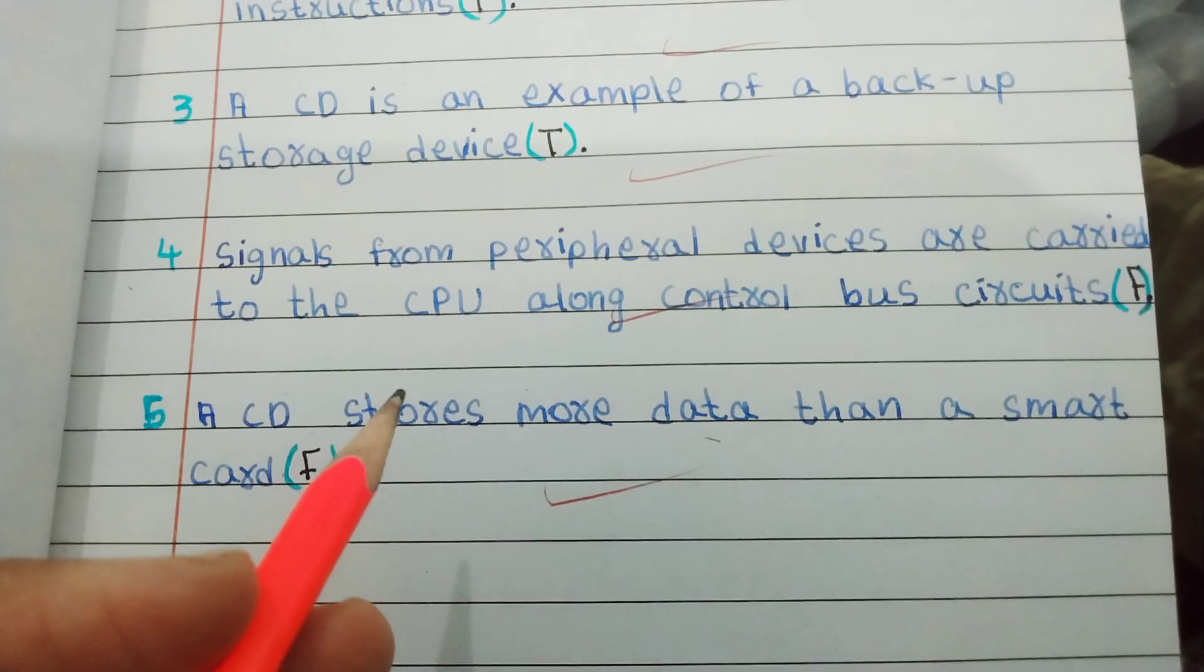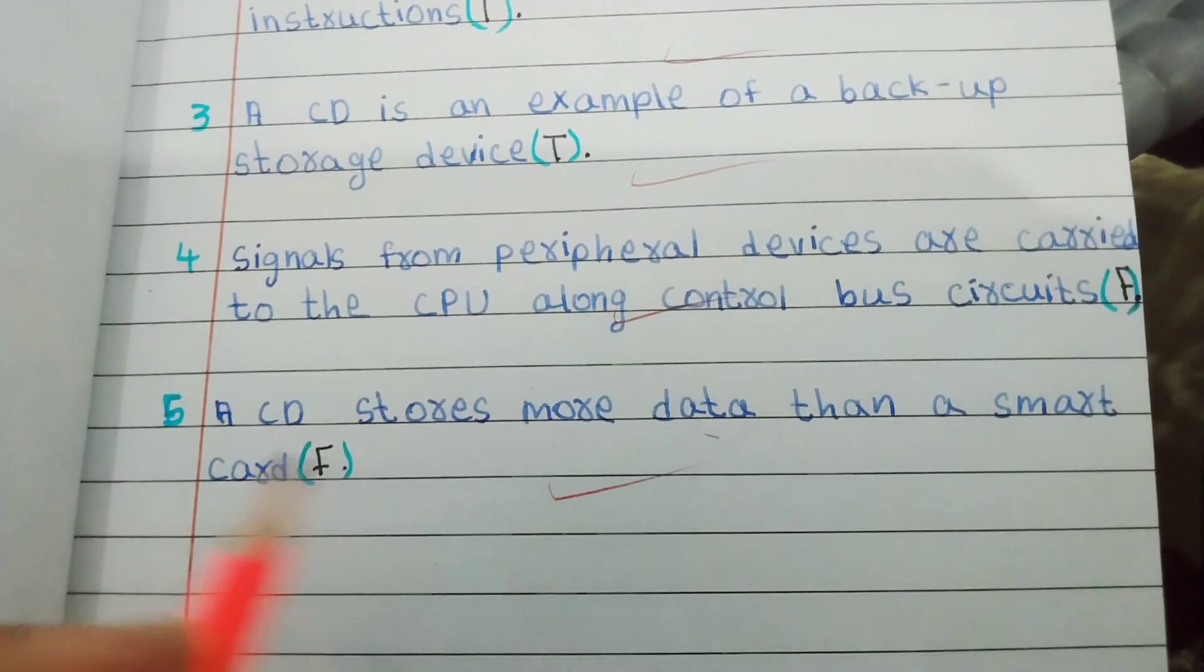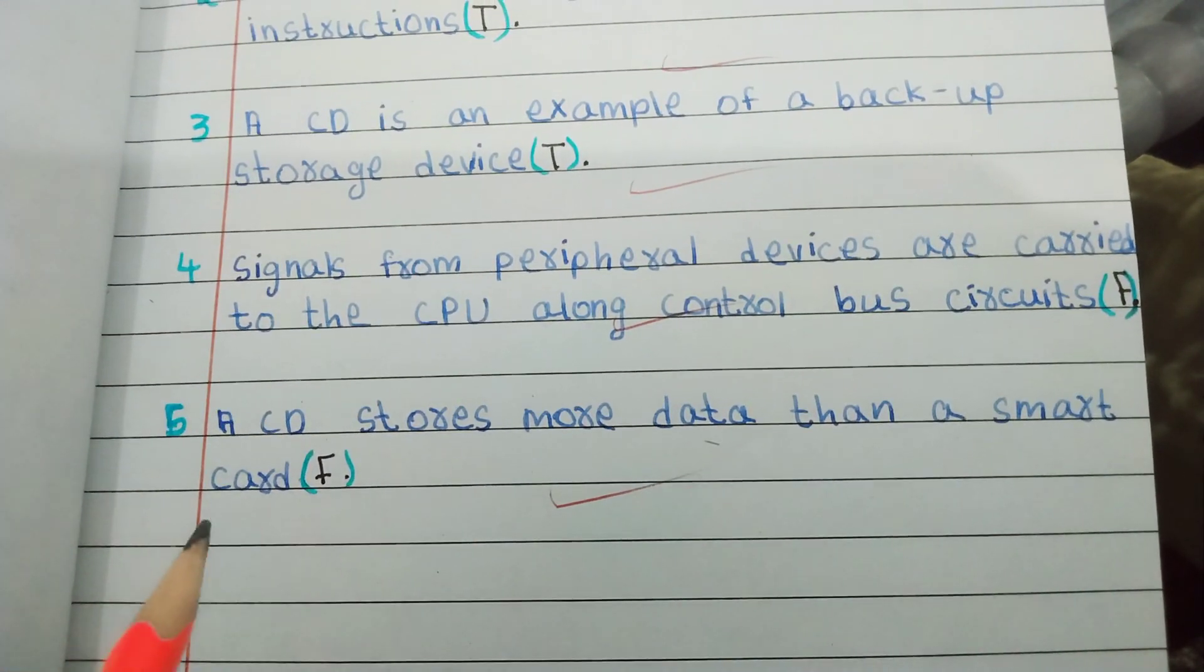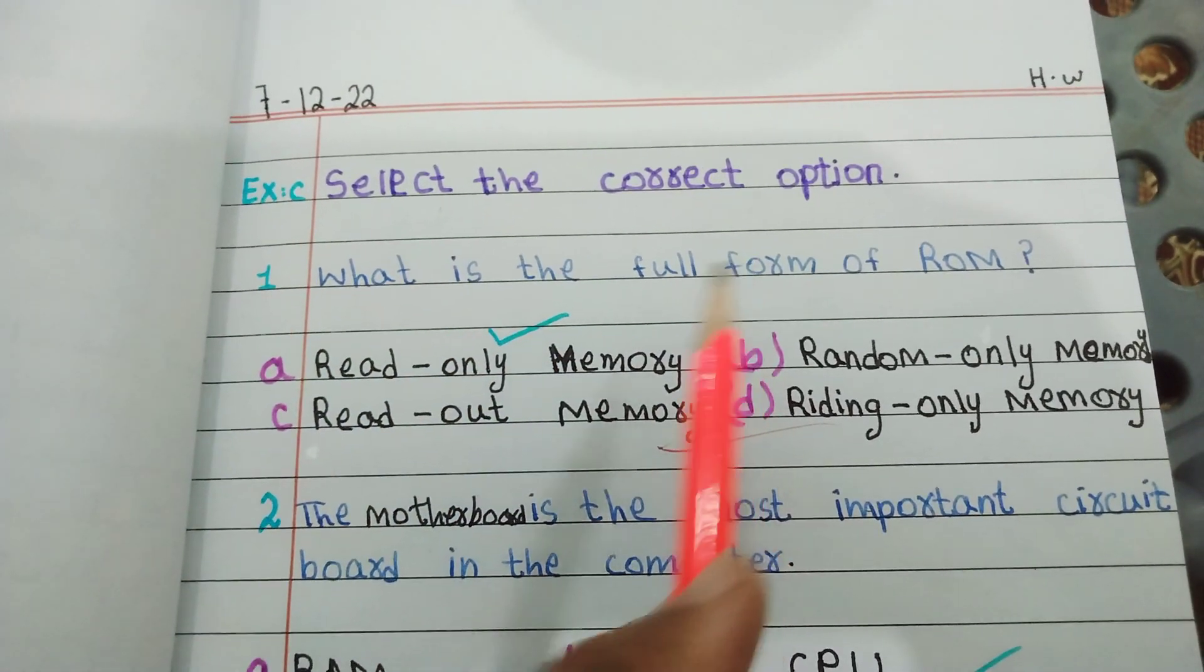Signals from peripheral devices are carried to the CPU along control bus circuits. False. A CD stores more data than a smart card. False.